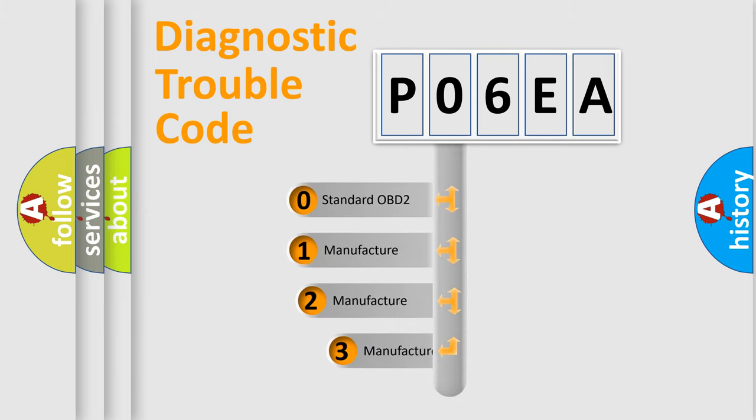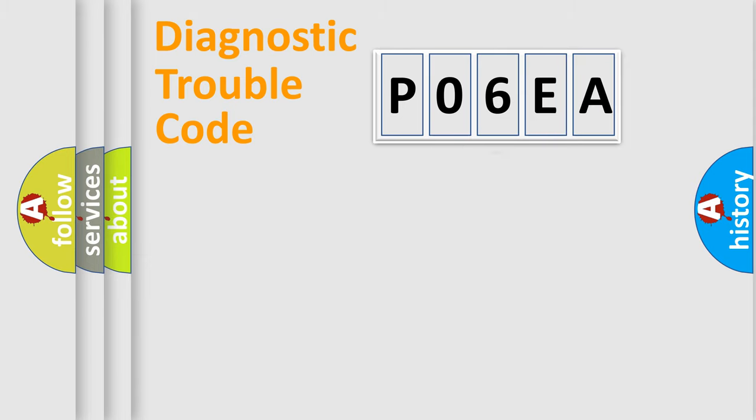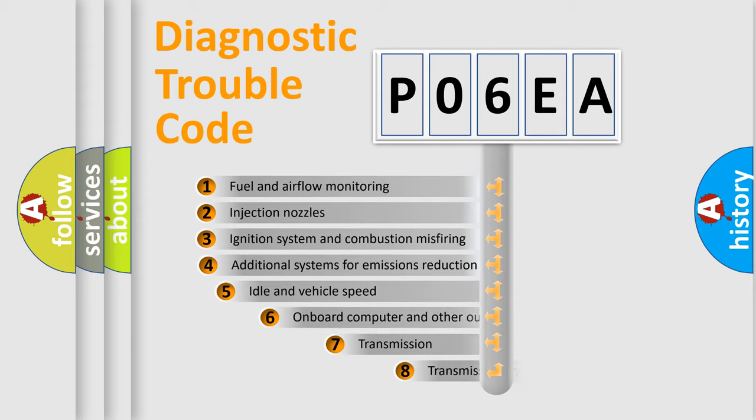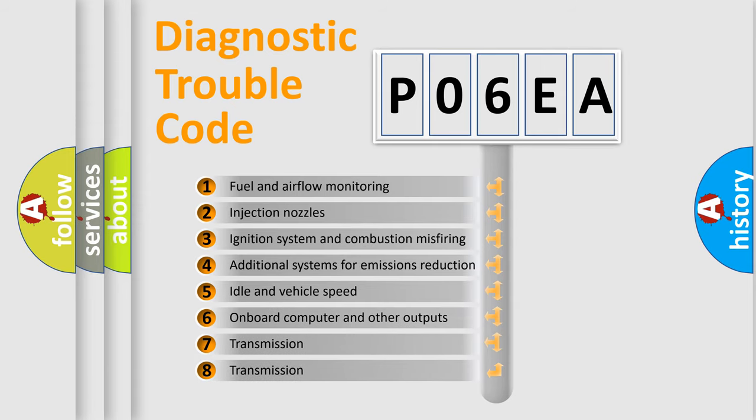If the second character is expressed as zero, it is a standardized error. In the case of numbers 1, 2, or 3, it is a manufacturer-specific expression of the car-specific error. The third character specifies a subset of errors.